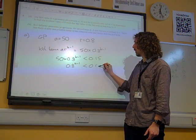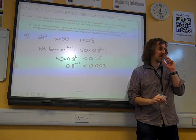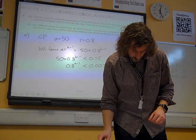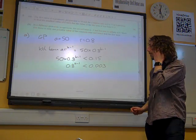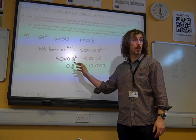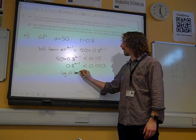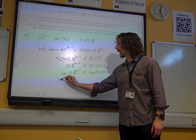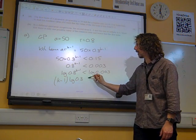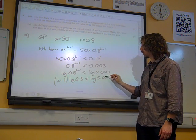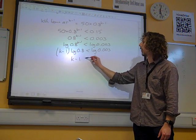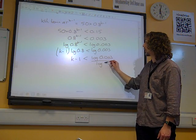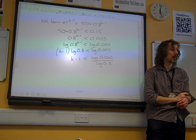Is that right? If you divide 0.15 by 50, we get that. Yes, 0.003. Right. Now we can take logarithms. Now we're okay because we've got a single term to a power. So log 0.8 to the K minus 1 is less than log 0.003. K minus 1 log 0.8 is less than that. So K minus 1 is less than... Oh, hang on. Yeah. Remember this as well. This is full of little traps, this question, isn't it?